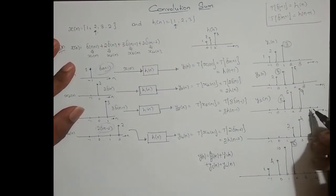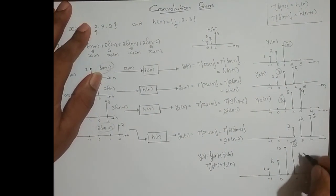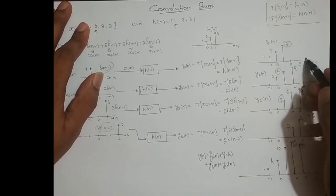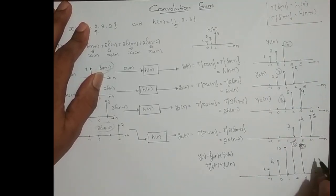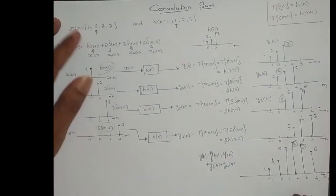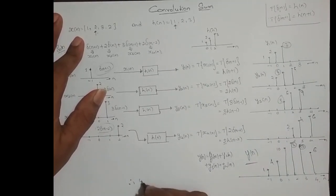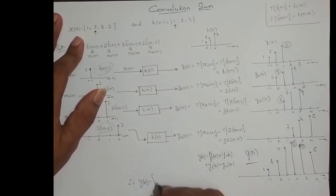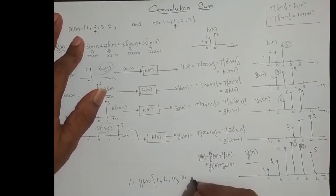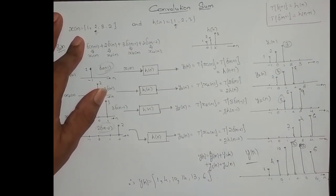At n = 3, only y4 contributes a value of 6. So the output sequence y(n) is [1, 4, 10, 14, 13, 6] with the sample at n = 0 equal to 4. This is the output of the LTI system.